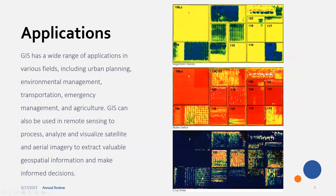GIS has a wide range of applications in various fields, including urban planning, environmental management, transportation, emergency management, and agriculture. GIS can also be used in remote sensing to process, analyze, and visualize satellite and aerial imagery to extract valuable geospatial information and make informed decisions. As shown in the image on the right, GIS can be used for crop analysis, where each polygon overlays imagery and you're analyzing vegetation density, water deficit, or crop stress.